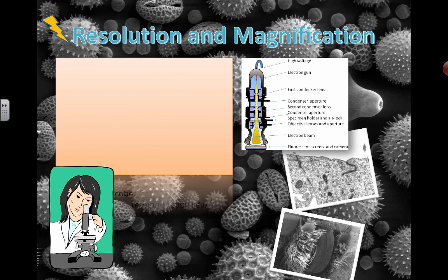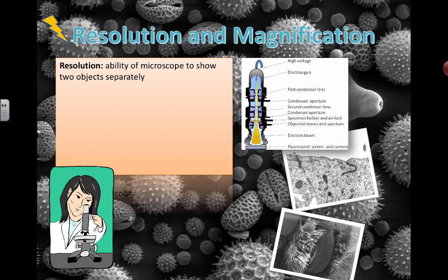Quick note — we've heard about this word resolution before. Cameras and everything, it's all about resolution. Your iPhone camera — iPhone 4, 5, 6 — it's all about increasing the resolution and getting the number of megapixels. So it's basically talking about how much detail can be captured in a single image.